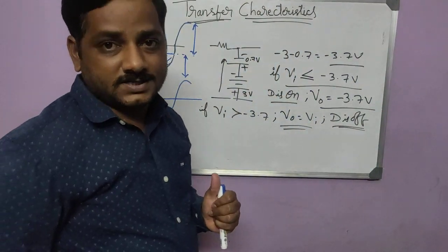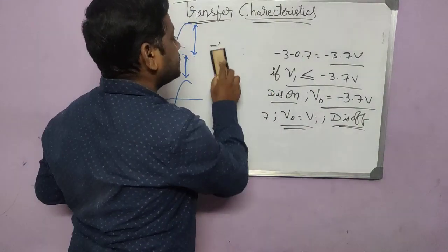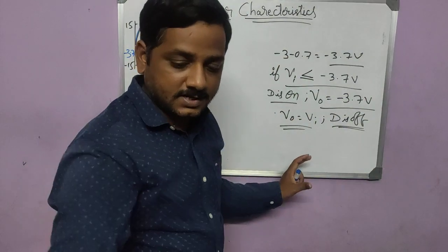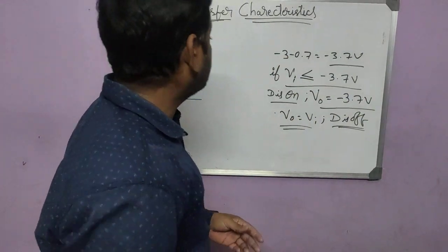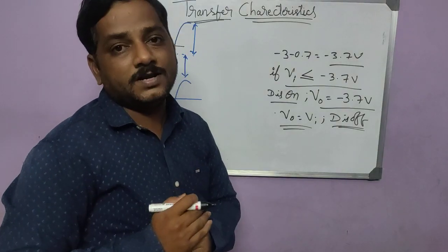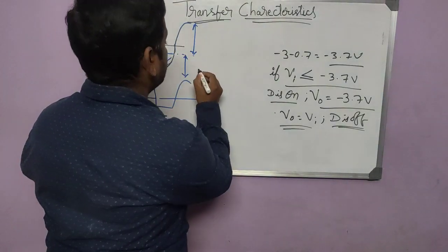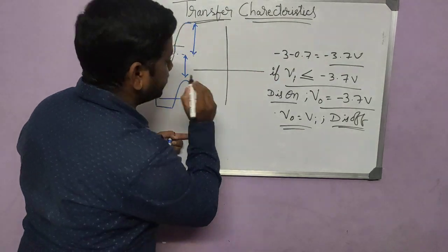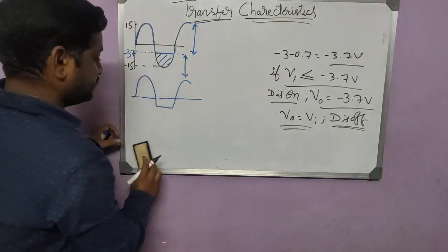Now let us understand how to plot the transfer characteristics using this. The transfer characteristic is plotted between the output variable and the input variable — V_out on one axis and V_in on the other.